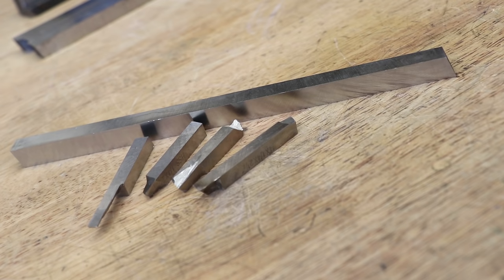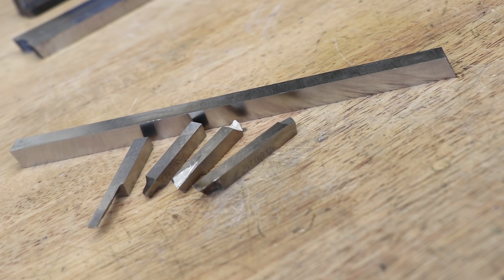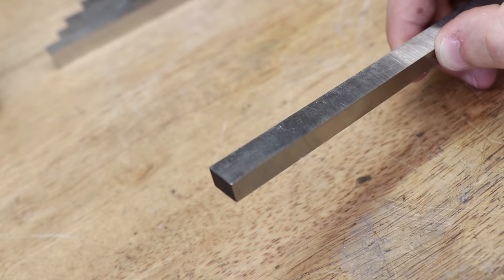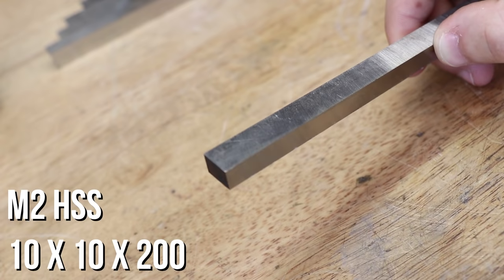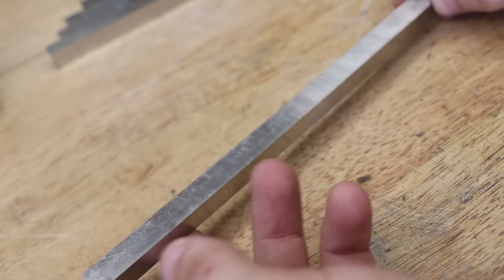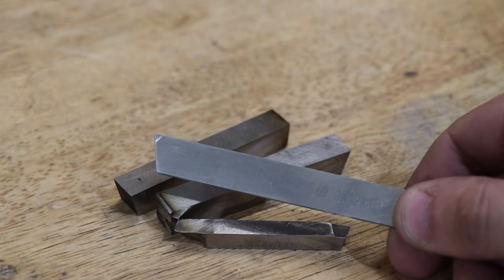By no means am I an expert in doing this, but I've ground my fair share of tools over the years and I've made my share of mistakes, so hopefully you'll be able to learn something. So let's start from the beginning. This is a blank of high-speed steel, typical to one that you'd buy. It's 200 millimeters long and 10 by 10.